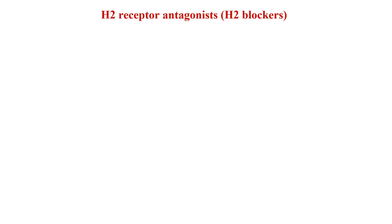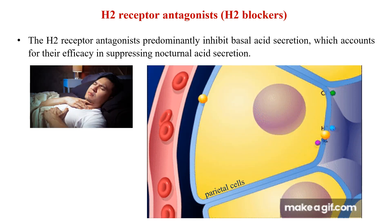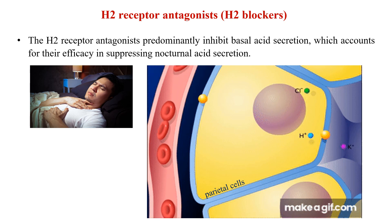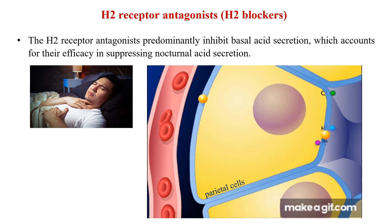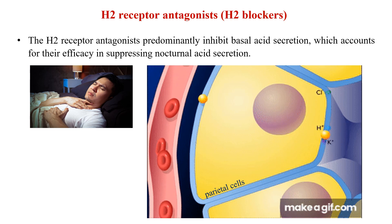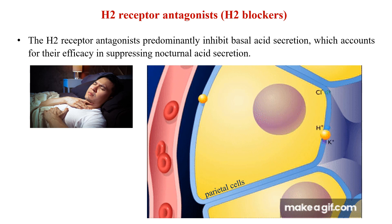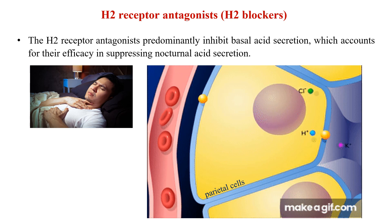An important point: H2 receptor antagonists predominantly inhibit basal acid secretion, which accounts for their efficacy in suppressing nocturnal acid secretion — that is, acid secretion during sleep or at night. Your stomach makes acid all the time, even when you are not eating. At night it can make more acid, especially when fasting, causing problems like heartburn during sleep. In simple words, H2 receptor blockers are good at stopping the slow, constant drip of stomach acid, which is why they work well at reducing the extra acid produced at night.